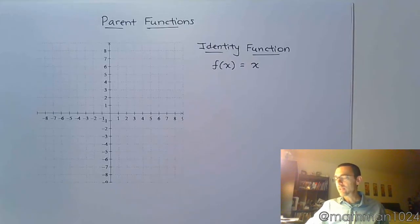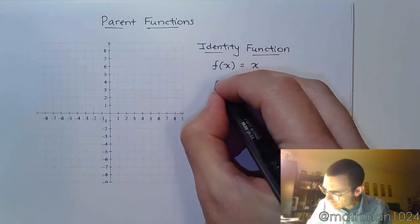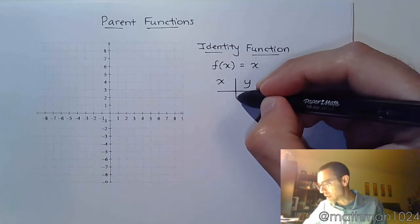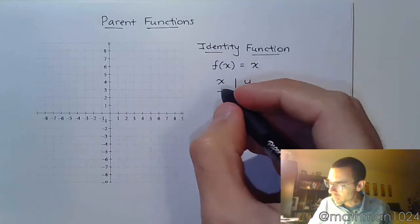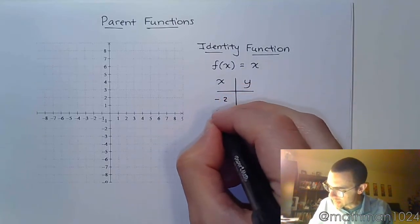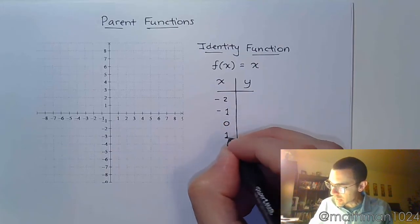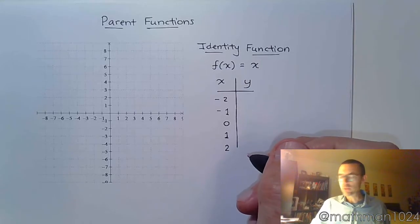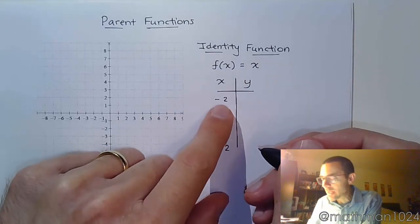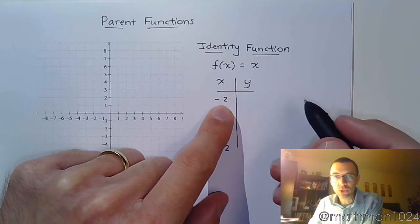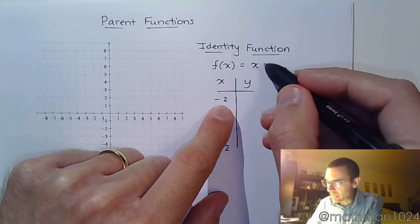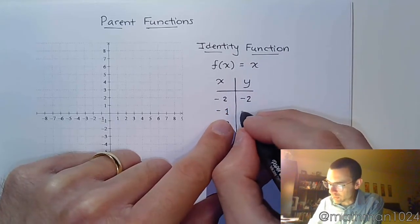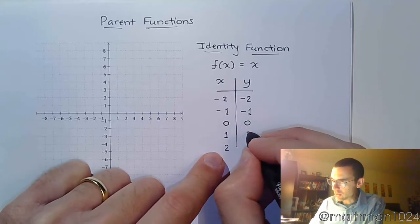The identity function is f(x) = x. And what you're going to notice with the identity function, and anything that is labeled the identity, is that what you plug in is exactly what you get out. For most of these, we create a t-table of values to get an idea about the shape, and then we just keep on going until we really know what the shape is, the key points, the key attributes. So, I said the identity function, what you plug in is what you get out. You plug in negative 2, you're not doing anything to the x, so you get negative 2. You plug in negative 1, you get negative 1, and so on.